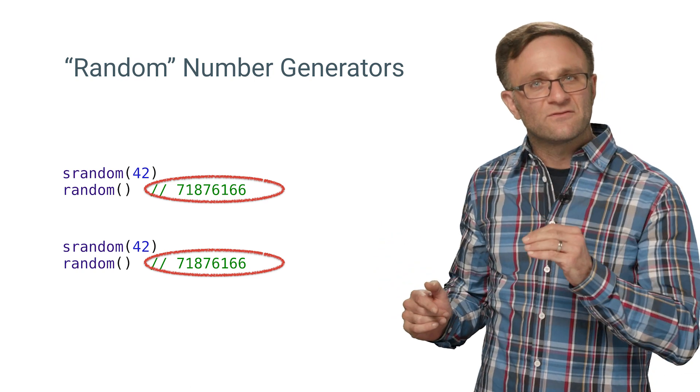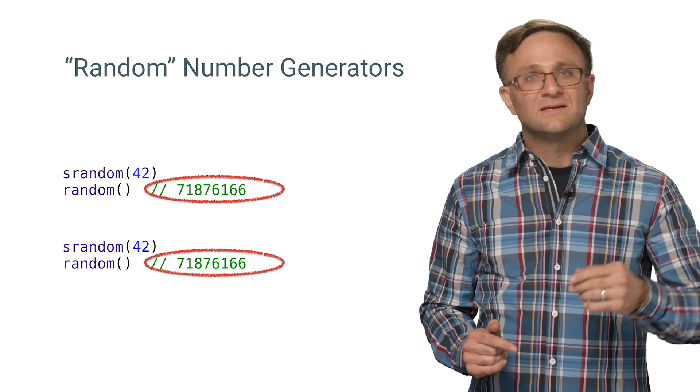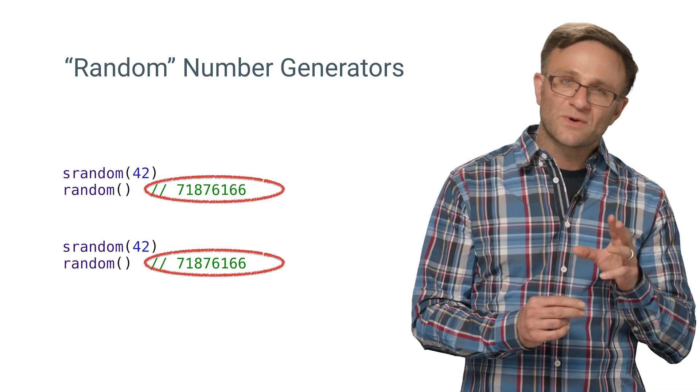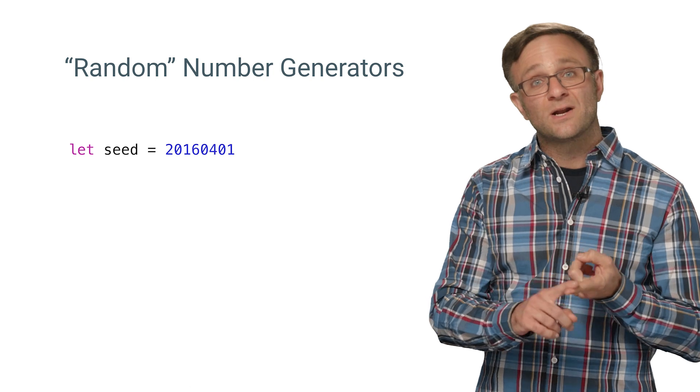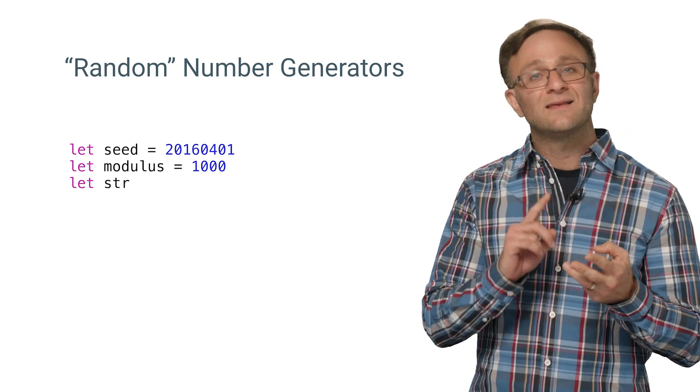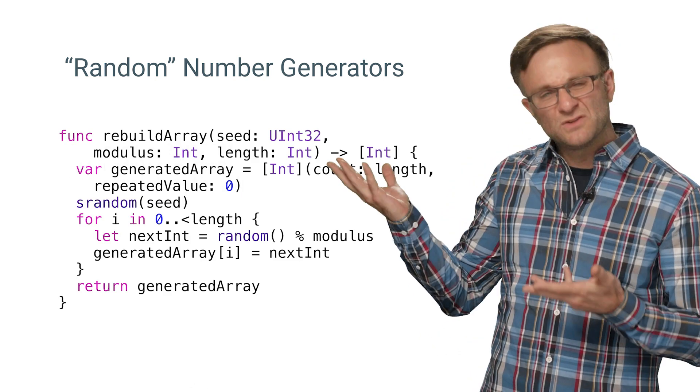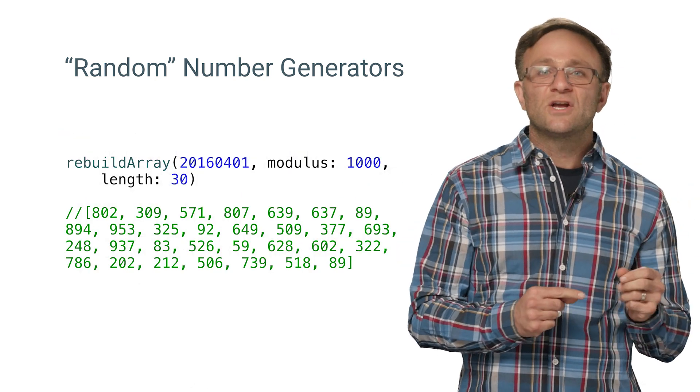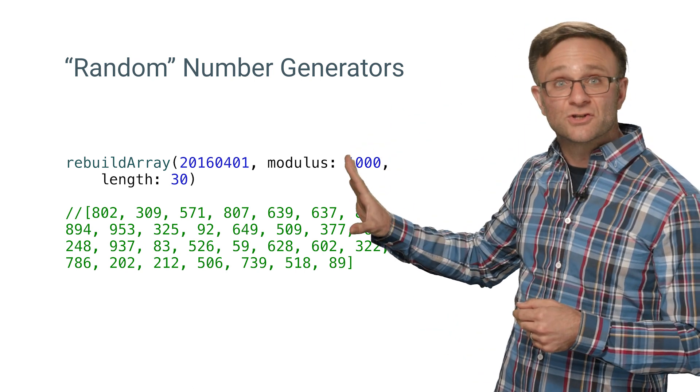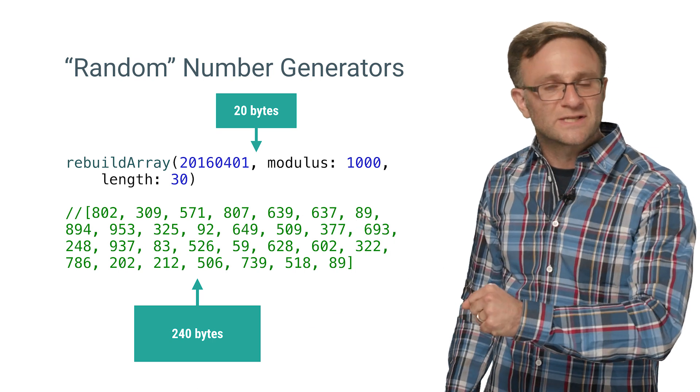And we can take advantage of that fact to recreate that list of integers using a random number generator. You see, all I need to do to regenerate that array on a device is to supply three parameters: the seed for an agreed upon random number generator, an upper bound to apply to these results, and the length of the list. I simply supply those numbers to a method that looks a little like this, and I can recreate that original number stream. Just like that, I've built my array of 30 integers using just two integers and an int 32. That's a 92% compression rate.